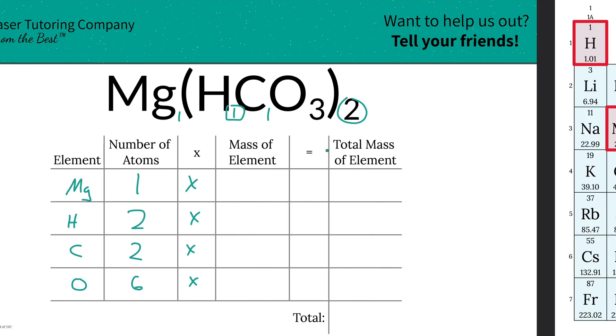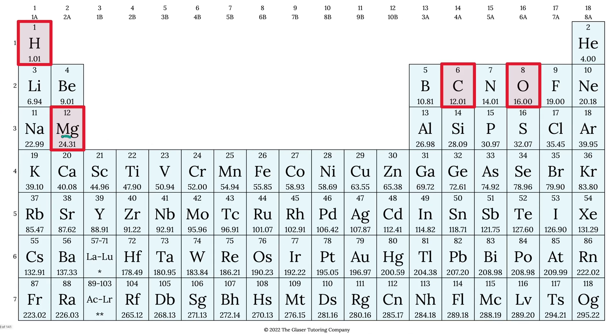Then we're going to multiply all those number of atoms by the mass of each individual element. The periodic table helps us out with this. We got 24.31 units of mass for magnesium, hydrogen is 1.01, carbon is 12.01, and oxygen is 16.